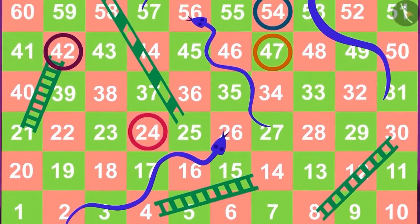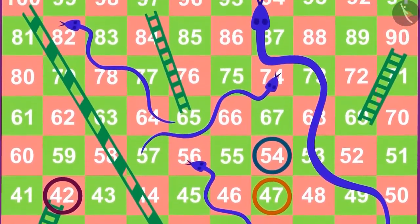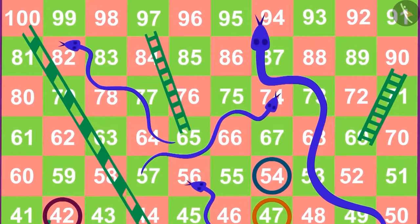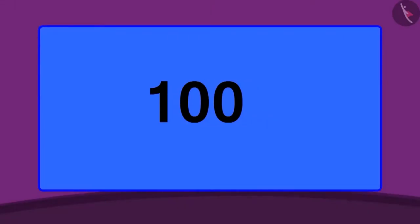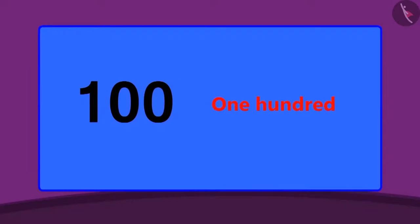So far we have learned about two digit numbers. In this lesson we will learn about three digit numbers. The count of three digit numbers starts from 100. Do you know that 100 runs in the game of cricket is also called a century?